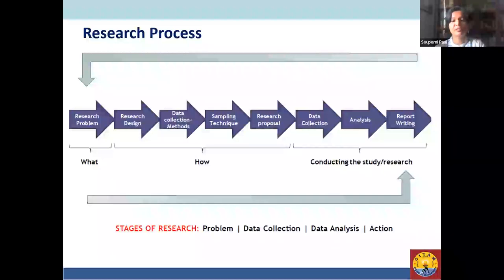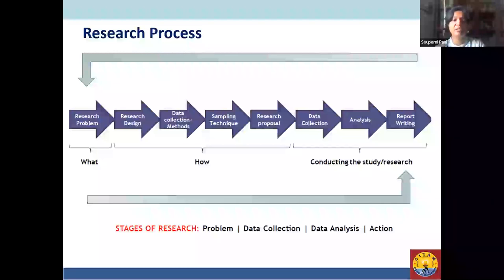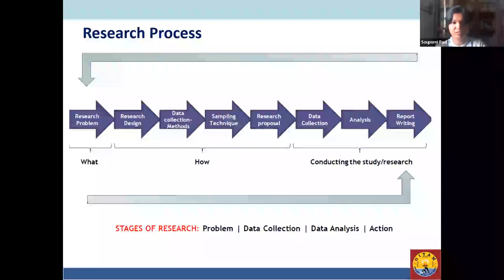The stages of research in brief: first is a statement of the problem, which includes the introduction, aim, and objective of the research. According to the objective, you collect data, then process and analyze it, and afterwards take action — write the report. The report can be a chapter in an architectural thesis, a chapter in a PhD, or a standalone paper, which is the main output of the research process.